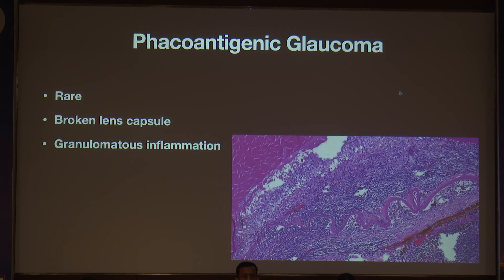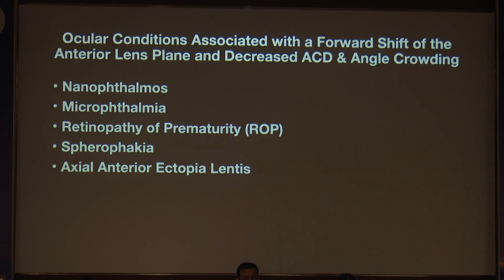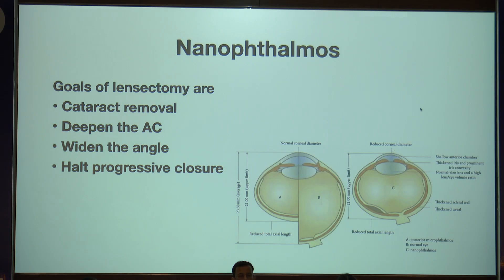Phacoantigenic glaucoma is rare — it occurs due to a broken lens capsule causing granulomatous inflammation. Other conditions that shift the anterior lens plane forward include nanophthalmos, microphthalmos, ROP, spherophakia, axial anterior ectopia lentis. In nanophthalmos, once you remove the cataract, the chamber deepens, the angle widens, and it will halt the progression.